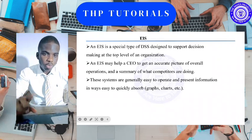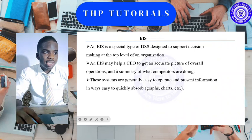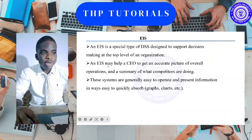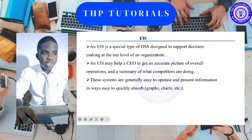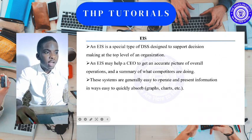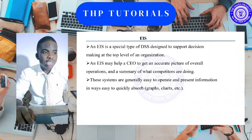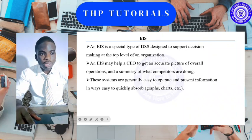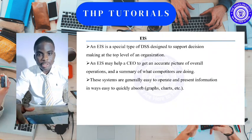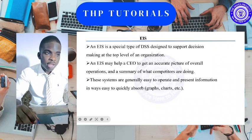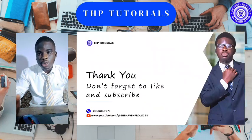EIS is used for decision making at the top level. For example, it may help a CEO get an accurate picture of overall operations and a summary of what competitors are doing. These systems are generally easy to operate and present information in ways that are easy to quickly absorb, such as through graphs, charts, and so on.